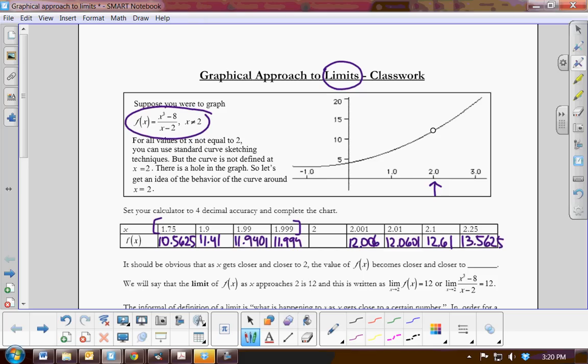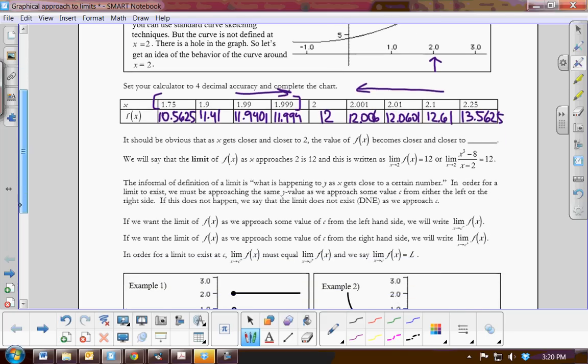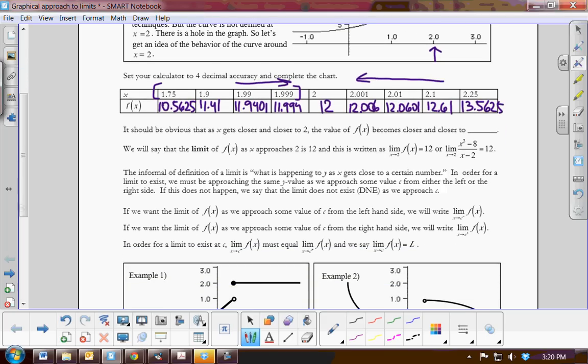So you can see that if I'm approaching from the right and if I'm approaching from the left, it looks like the limit would be 12. So it should be obvious that as x gets closer and closer to 2, the value of f of x becomes closer and closer to the value 12.